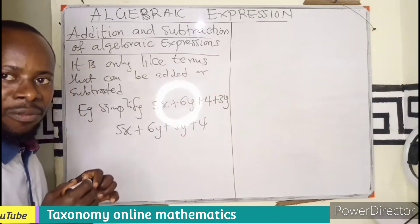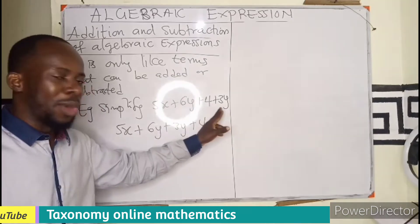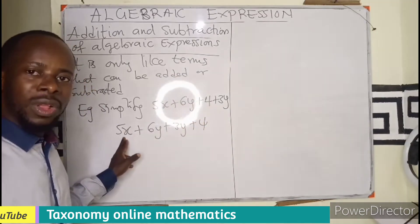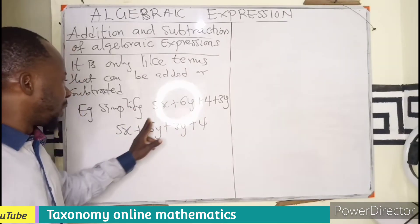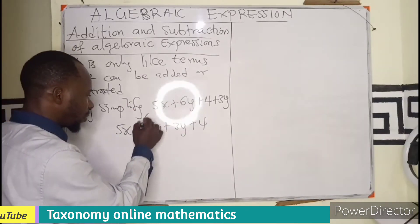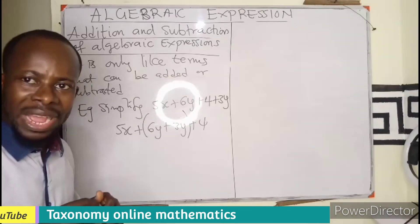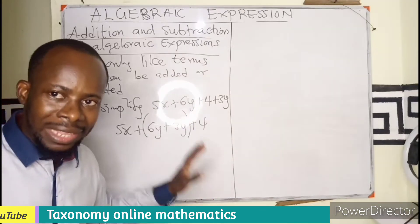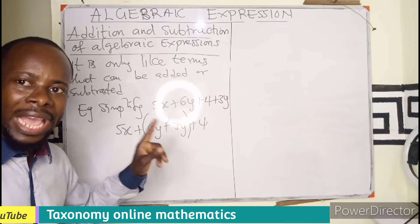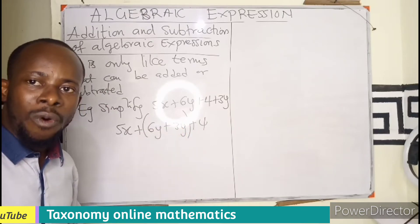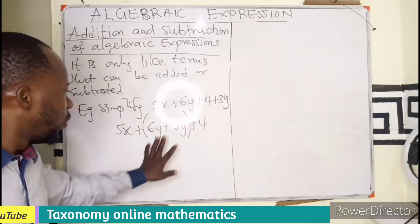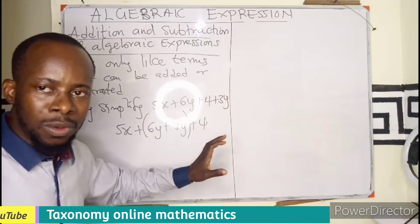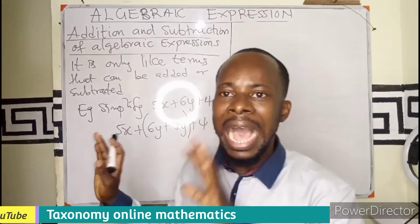If you are asked to simplify this, you are going to look out for the like terms and combine them — the terms that have variables of equal power. I can see 5X has no other like terms, so I maintain that. Then 6Y and 3Y are like terms. And 4 is a constant on its own. There are 4 terms.